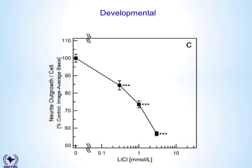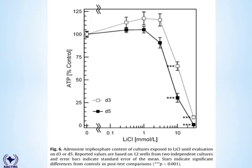There is evidence for direct neurotoxicity from lithium. In one study looking at the growth of neurons in cell culture, with lithium concentrations on the x-axis within the therapeutic range, there is a demonstrable decrease in the development of neurites. Similar cell studies looking at ATP production show that within concentrations of lithium commonly seen in toxicity, cellular ATP production starts to drop off, providing another possible mechanism for neurological dysfunction.